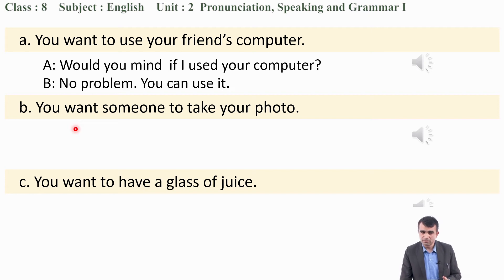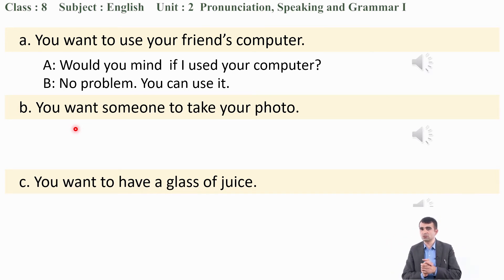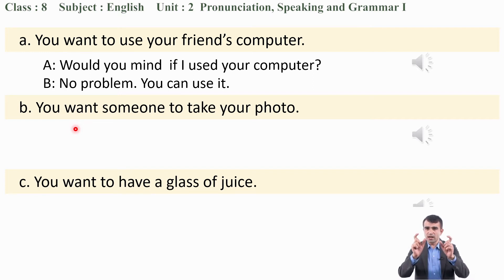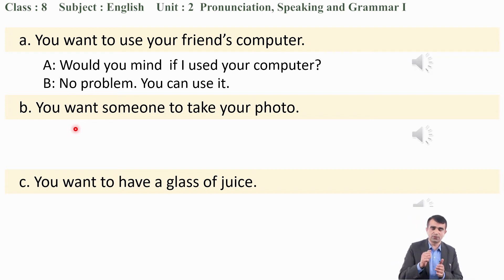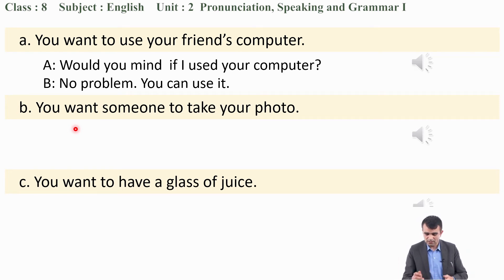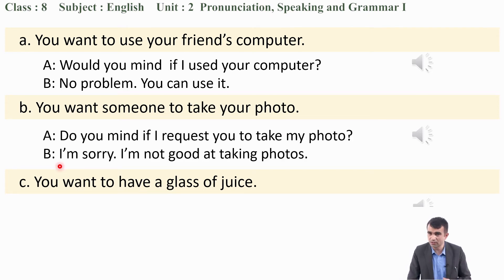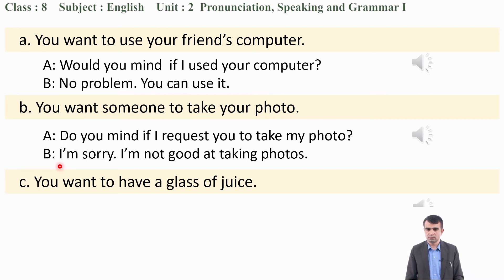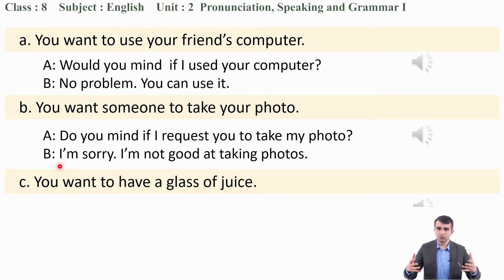Situation B: you want someone to take your photo. You should ask for permission. 'Do you mind if I request you to take my photo?' — 'I'm sorry, I'm not good at taking photos.' You can use other structures for asking for permission as well. Situation C: you want to have a glass of juice. 'Can I drink a glass of juice?' — 'Yes, you can, it's for you.' Or 'Is it all right if I drink a glass of juice?'